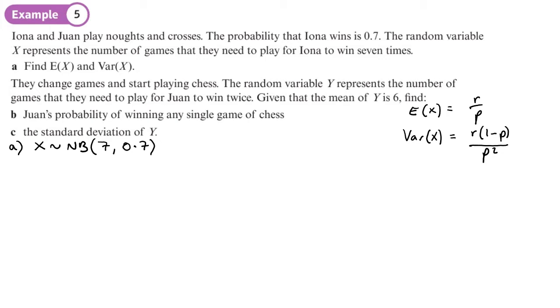All right, so it's just substituting in r and p. In this question, r is 7 and p is 0.7, so E(X), the mean, is going to be 7 divided by 0.7, which is 10. I don't think I need a calculator for that.